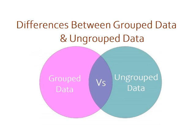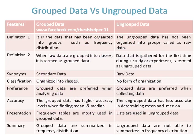This video covers the differences between grouped data and ungrouped data with cross comparisons and examples. Grouped data is data that has been organized into groups, such as a frequency distribution, while ungrouped data has not been organized into groups and is called raw data.